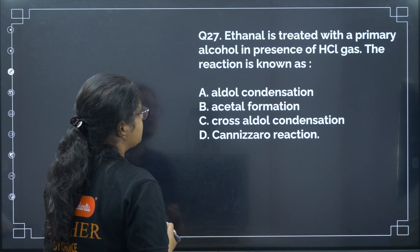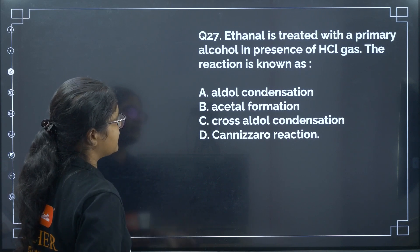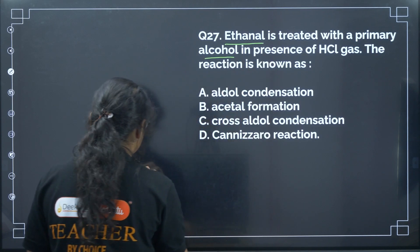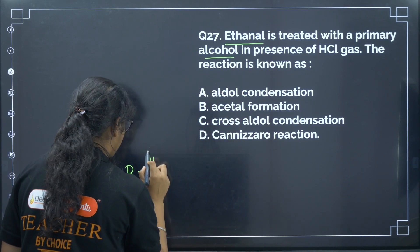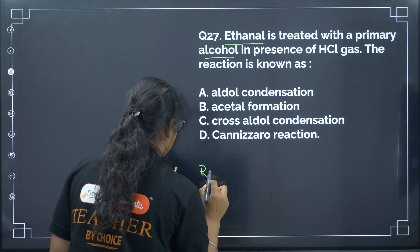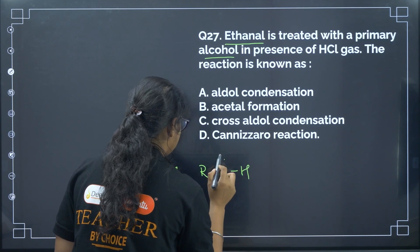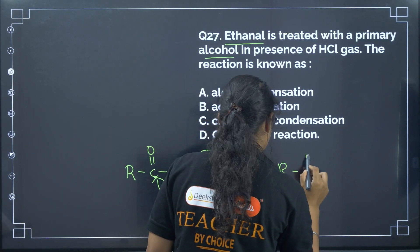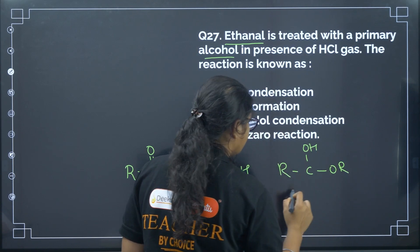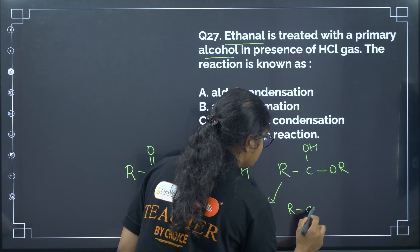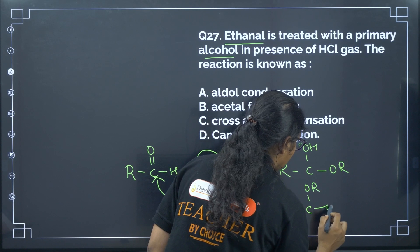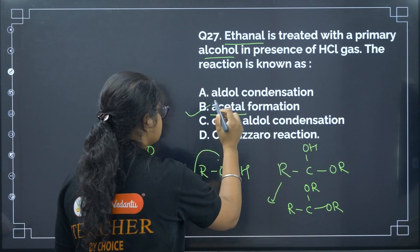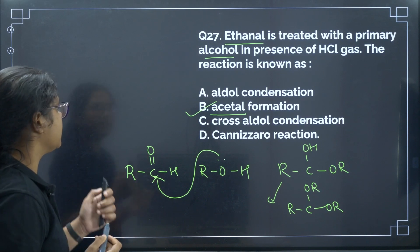Next: ethanol is treated with a primary alcohol in the presence of HCl gas — the reaction is known as? When an aldehyde (RCHO) reacts with ROH, we get RCH(OH)(OR) (a hemiacetal). Treating again gives RCH(OR)2 — an acetal, formed without involving any acyl group. This is acetal formation. Correct answer: option B.